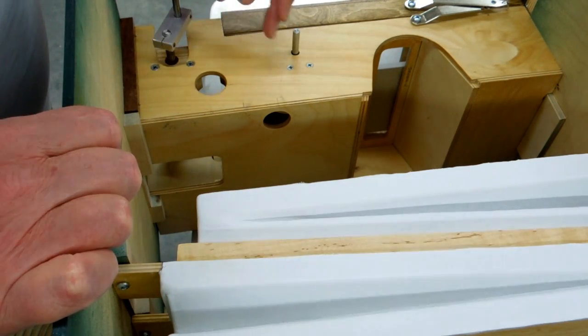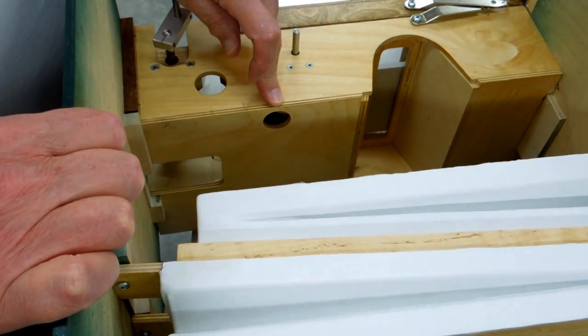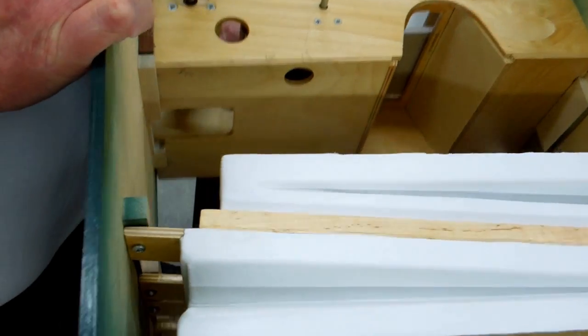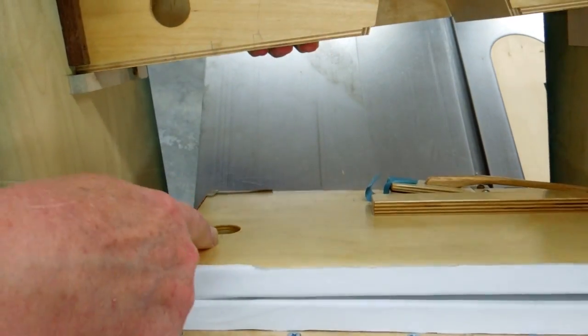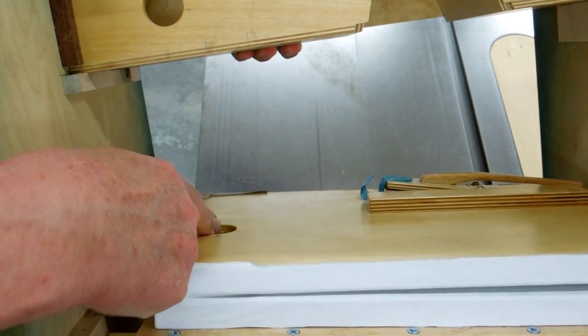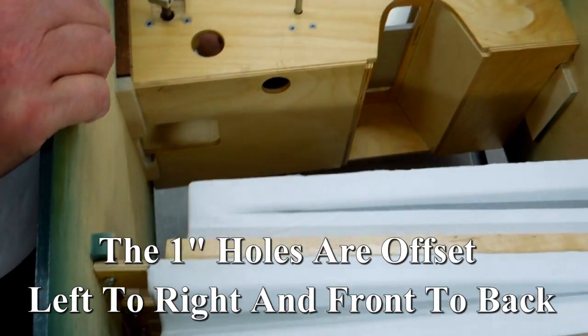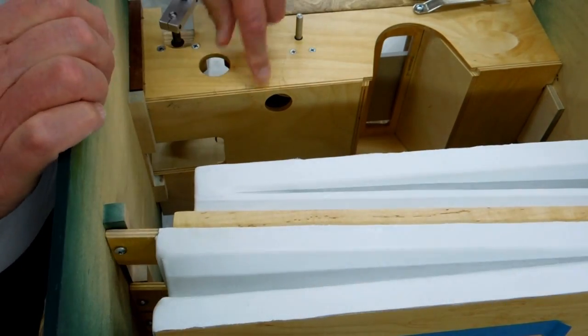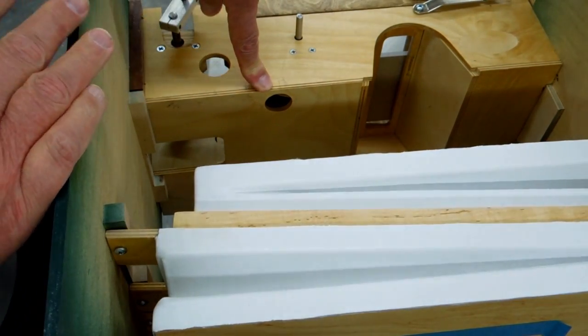One area that's a little bit difficult is the connection from the bottom of the pressure box to the top of the reservoir. This is a one inch hole in the top of the reservoir and it's a one inch hole in the bottom of the pressure box.